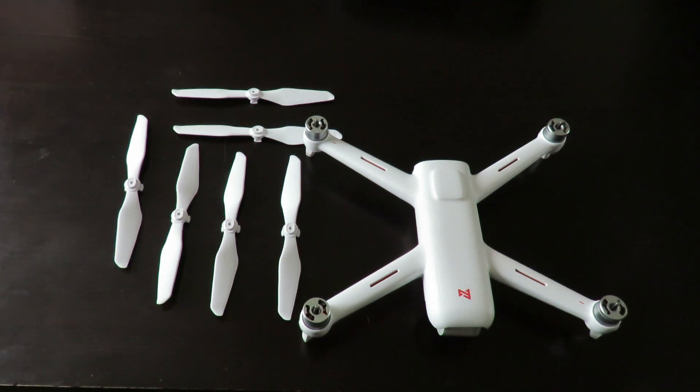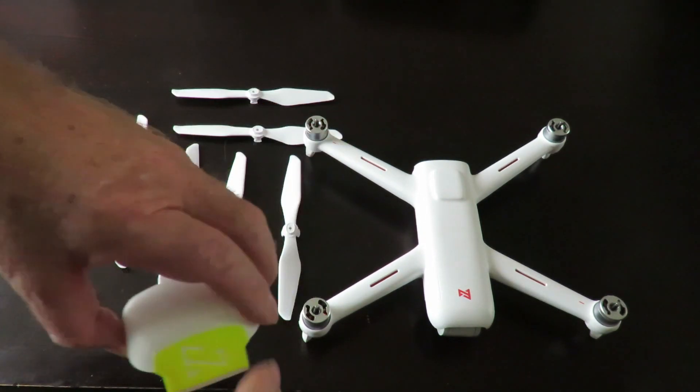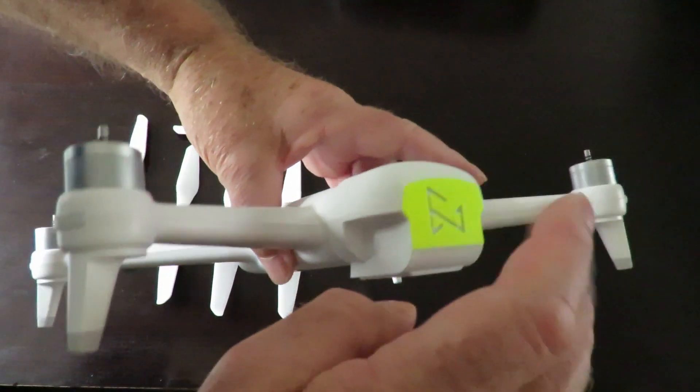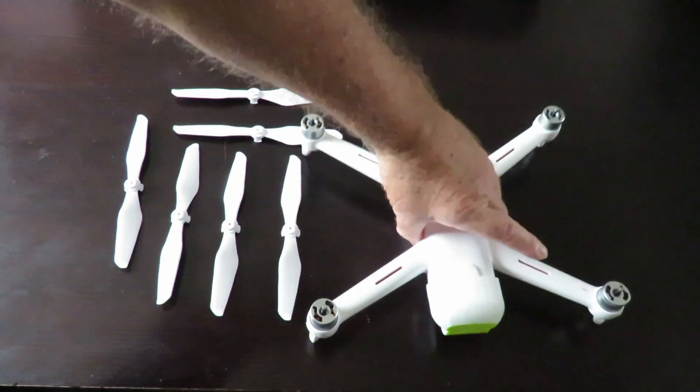Good day! Today we're having a look at the Xiaomi FIMI A3 and what you can print using a 3D printer. The first thing I printed out is a gimbal protector. It fits nicely just over the top there and slots in place like so, and that stops the gimbal from rocking around a little bit.